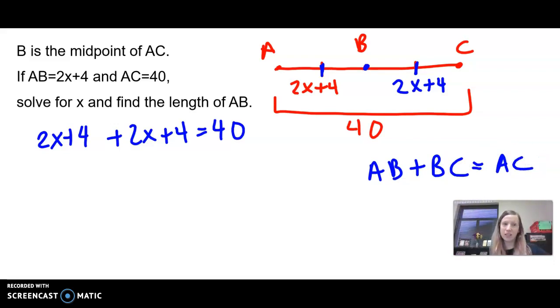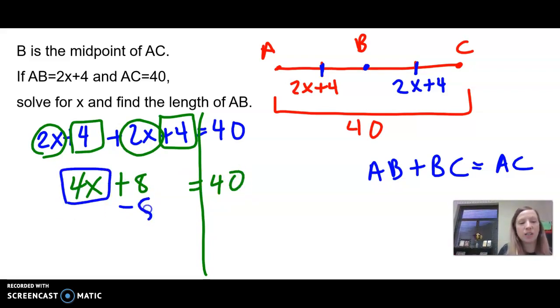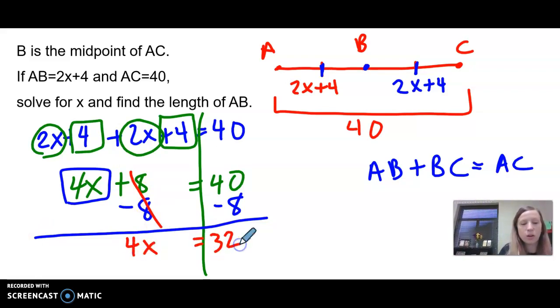Solving an equation like we did in algebra. Combine our like terms. So x's get combined. 2x plus 2x is 4x. And then our constants also get combined. 4 plus 4 is 8. From here, we're solving for x, so I'm getting rid of this 8 on both sides by subtracting it. So 4x equals 32. Divide both sides by 4, and we get that x is 8.